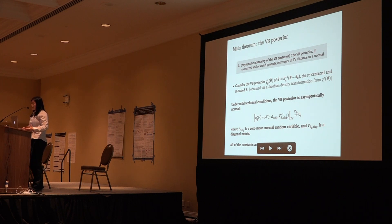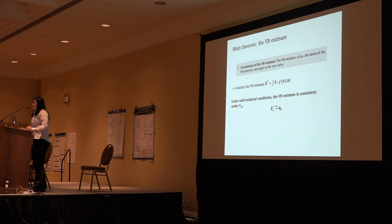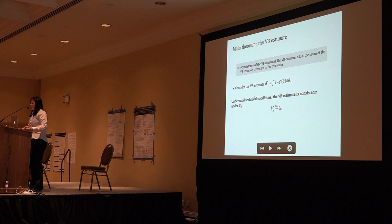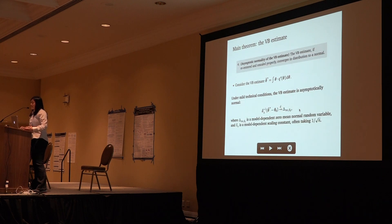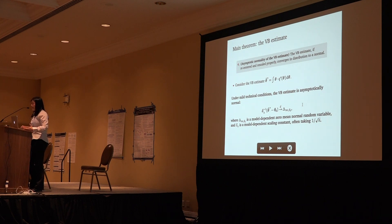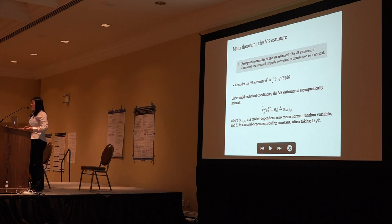There are two constants, delta and V, which are both model-dependent constants, meaning whenever you hand me a model, I'll be able to compute them based on the theorem. We can also establish properties for the variational Bayes estimate, which is the mean of the variational Bayes posterior — it is consistent and converges to the truth almost surely. After recentering and rescaling by the proper rate, it converges to a zero-mean normal random variable. This scaling rate, although model-dependent, in low-dimensional parametric models often takes the value of 1 over root n, giving us the root-n consistency seen in many classical results.